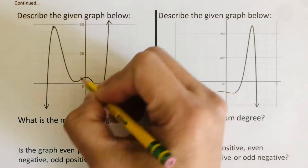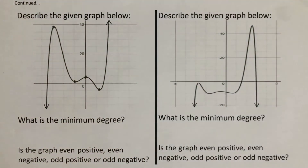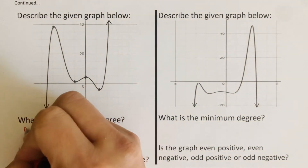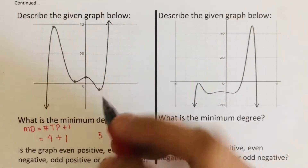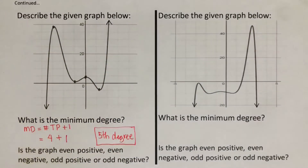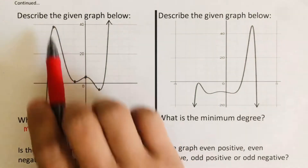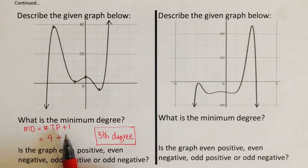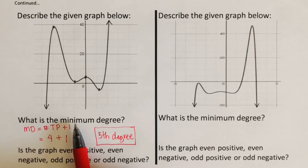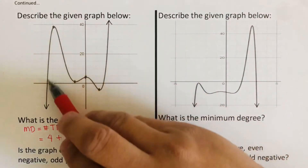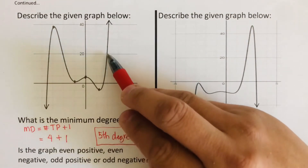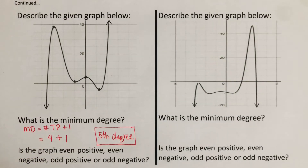We go ahead and determine the number of turning points: one, two, three, and four — so that's four plus one. This graph is a fifth degree polynomial with four turning points. We add one to get the minimum degree of five. Remember, we are looking for the minimum degree because some cases have multiplicity, meaning more than one factor at a certain point. Since the left side is directed downward and the right side is directed upward, this graph is odd positive.